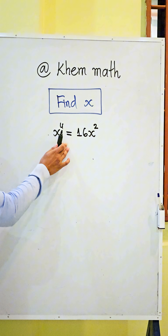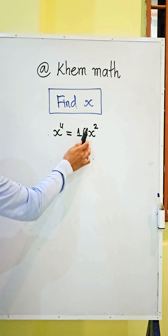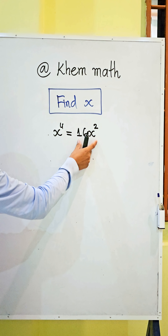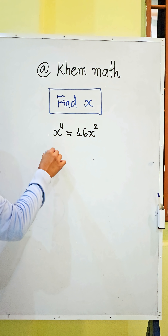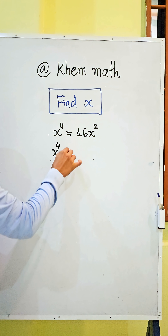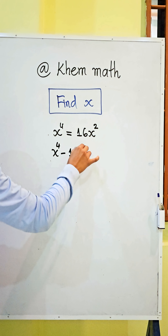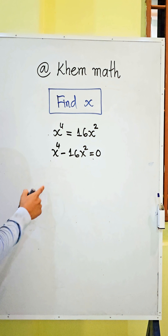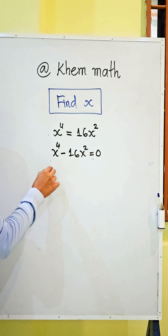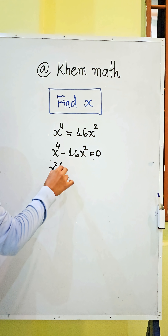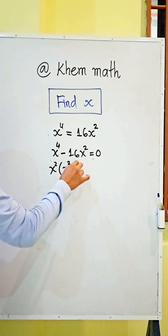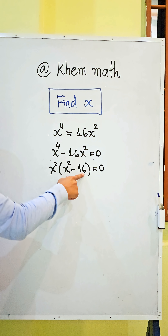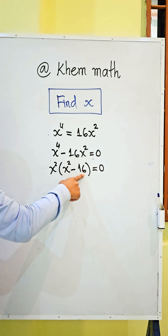Find x: x⁴ = 16x². The first step is to take 16x² to the left-hand side, getting x⁴ - 16x² = 0. Then we take x² as a common factor, giving x²(x² - 16) = 0. Here, 16 equals 4 squared.